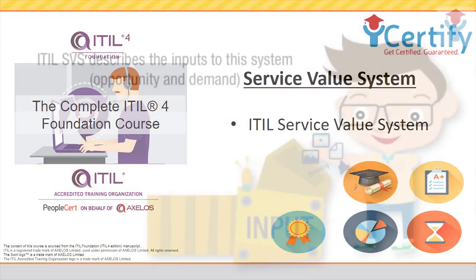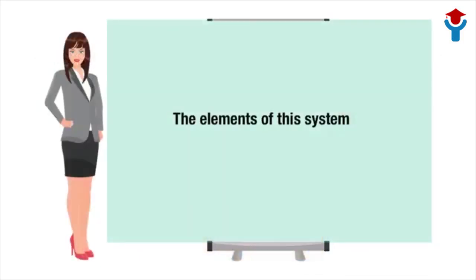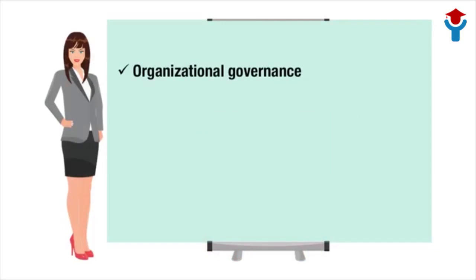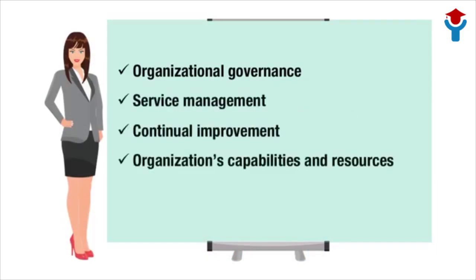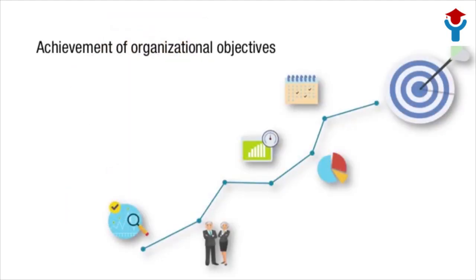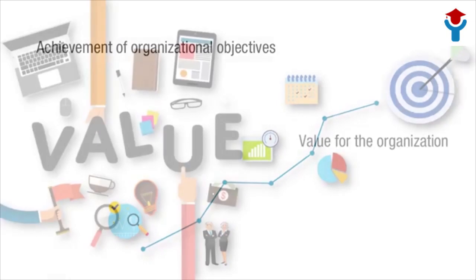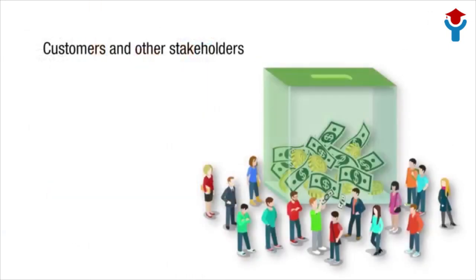The ITIL SVS describes the inputs to this system — opportunity and demand — the elements of this system: organizational governance, service management, continual improvement, and the organization's capabilities and resources, and the outputs: achievement of organizational objectives and value for the organization, its customers, and other stakeholders.